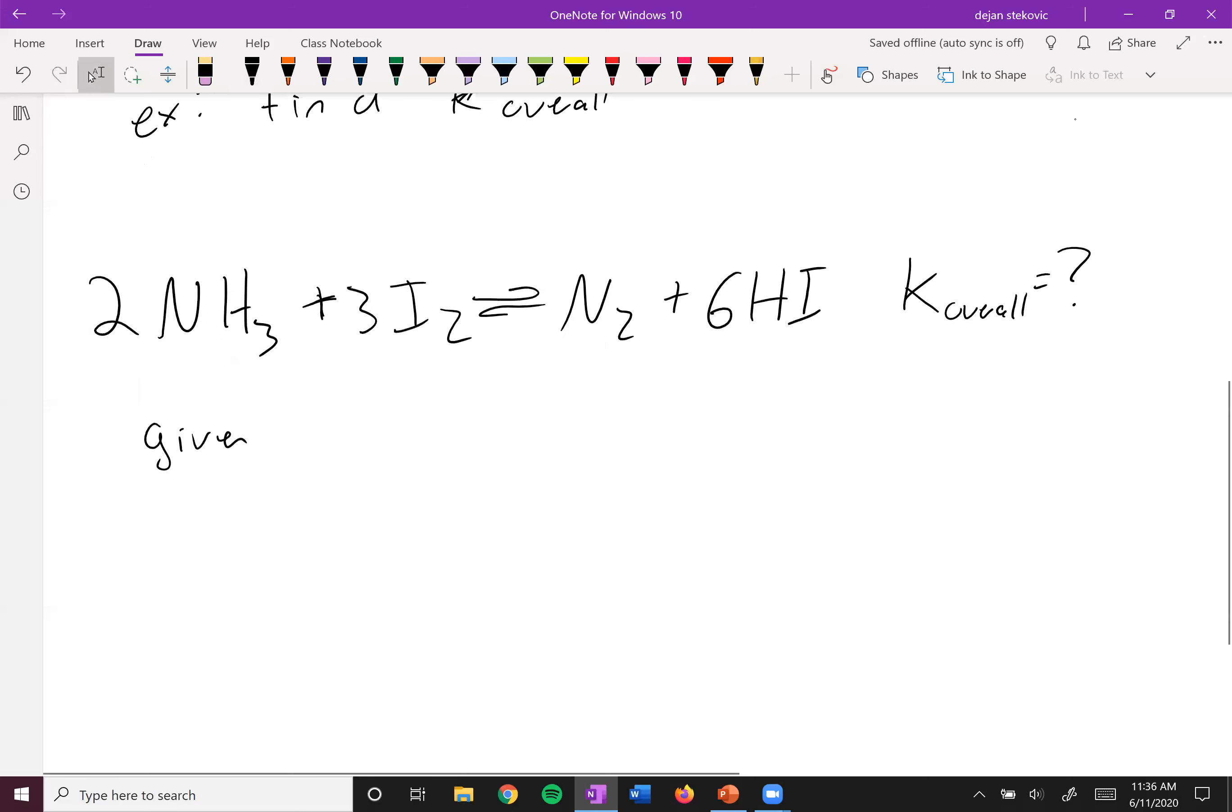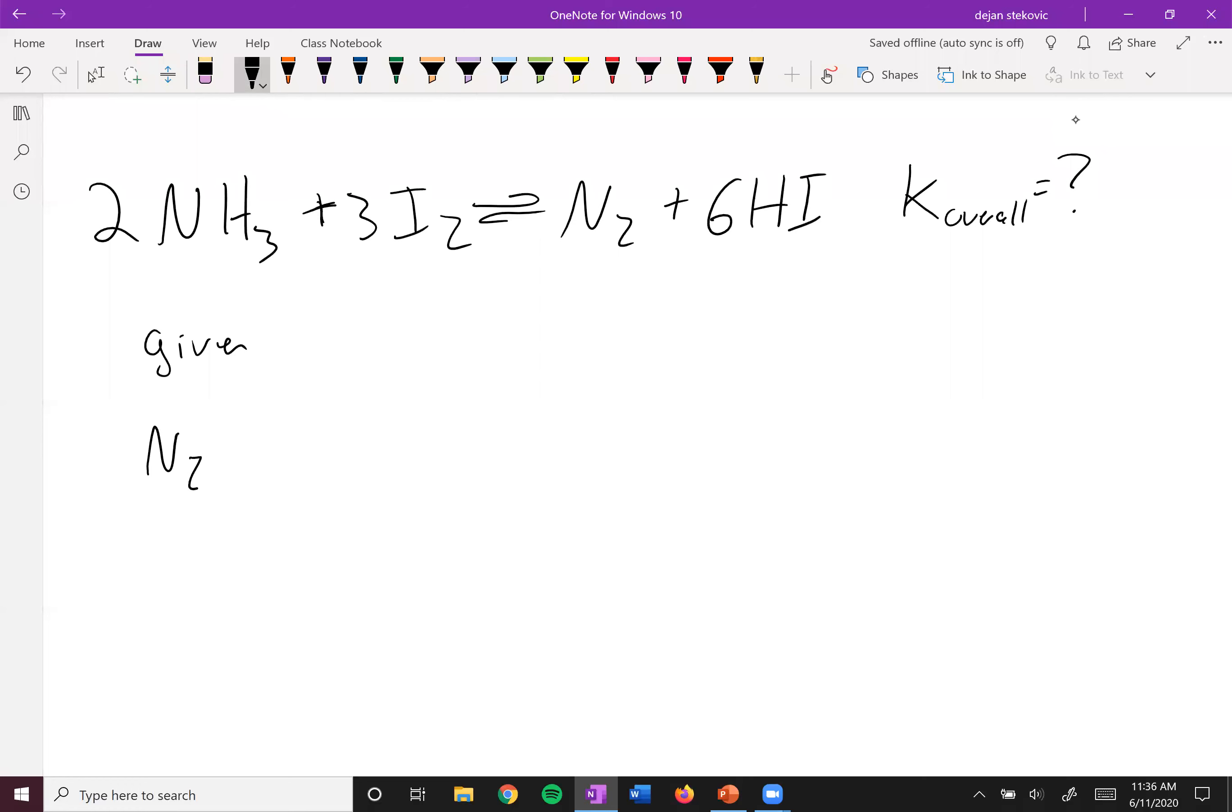And then you're given some other data. So in this case, what you're given here is N2 plus 3H2 going to 2NH3. You're given this K, we'll call this K1, so our first reaction is 0.50. And then you're given H2 plus I2 goes to 2HI. And we'll call this K2, and we'll say that this is equal to 50. And so there's multiple different ways to do this reaction. I'll kind of show you the way I think about it and kind of mix two methods together.